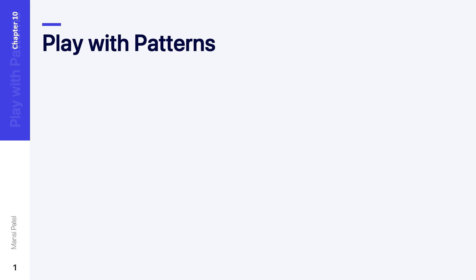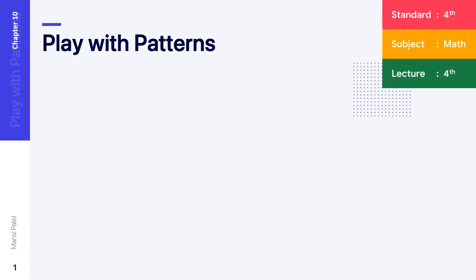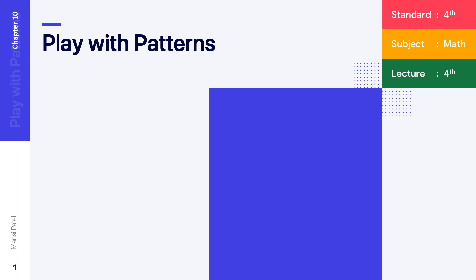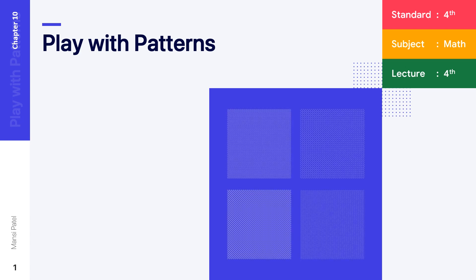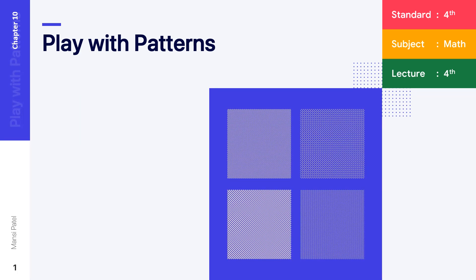Hello everyone, good morning. Welcome to today's fourth online session of chapter number 10. The name of our chapter is 'Play With Patterns.' In our previous session, we studied some patterns in shapes, numbers, and colors. Today we are going to see one magic square and after that we will discuss the magic triangle. So let us start our session with the magic square.